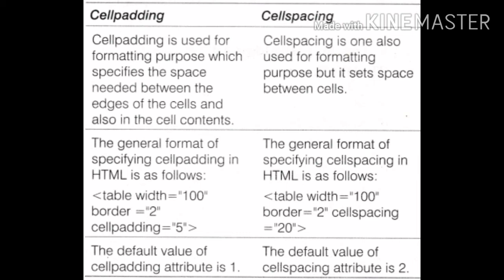Cell spacing भी formatting purpose से use किया जाता है लेकिन यह cells के बीच में space set करता है। The general format of cell padding in HTML is: table width=100, border=2, cellpadding=5. Whereas for cell spacing: table width=100, border=2, cellspacing=20. दोनों format में table width और border similar हैं, लेकिन cell padding में 5 है और cell spacing में 20।